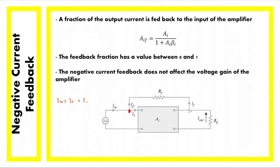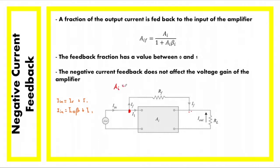So I_IN is equivalent to the sum of I_F and I_I. I_F from the feedback network is equivalent to I_O times the feedback fraction beta. From the open loop system, AI is equivalent to I_O over I_I, and with that, I_I times AI is equivalent to I_O, and we can substitute that in this term.